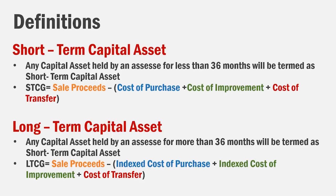For short-term capital assets, the calculation uses the cost of purchase, cost of improvement, and cost of transfer — there is no indexing in this. If you sold an asset, you subtract what you paid to buy it, any improvements made, and cost of transfer such as brokerage or stamp duty to arrive at short-term capital gains.